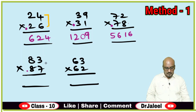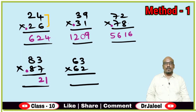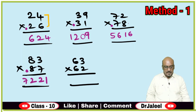Let us go for the next one. 7 threes — what is 7 threes? 21. Write it directly. Then increase 1 for 8 to get 9. 9 eights is 72. So the answer is 7221.